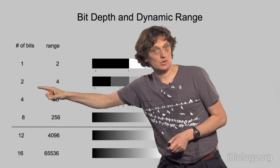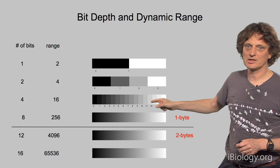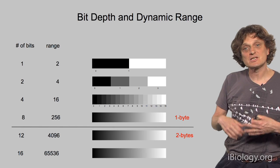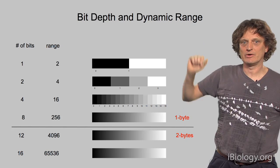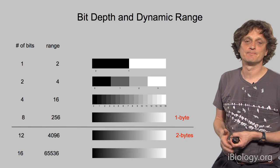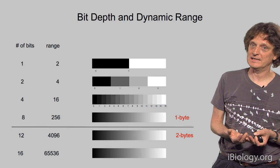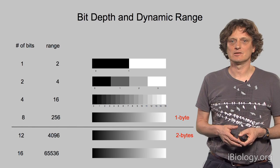Images can have 2 bits giving 4 grayscale values, 4 bits giving 16 grayscale values, and so on. There is no reason to stop at one byte — many modern cameras have a much larger dynamic range than 256, requiring more bits to encode. Many cameras have a dynamic range of 12 bits giving 4,096 grayscale values, or 16 bits giving almost 65,000 different grayscale values.